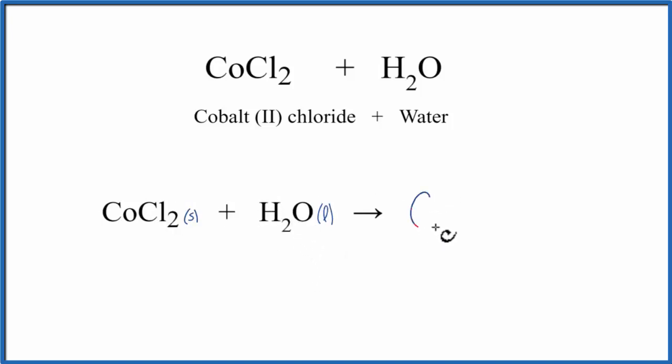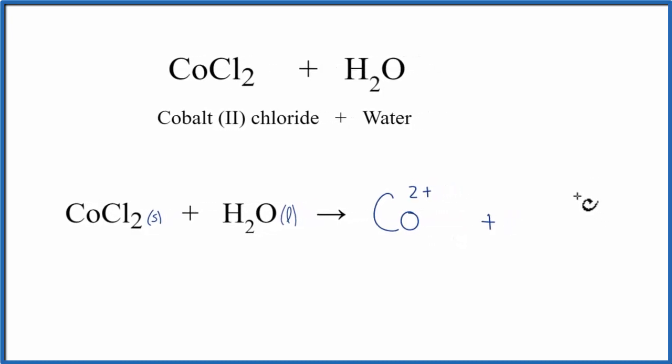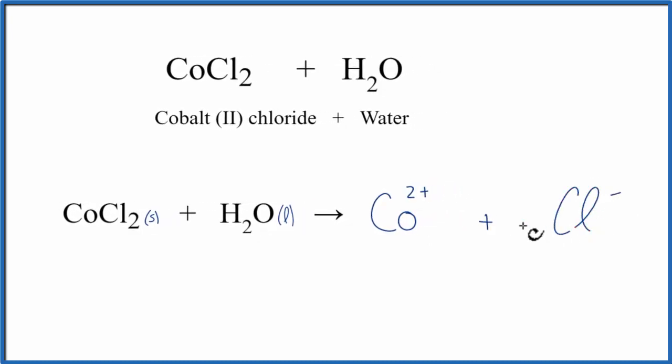So we'll have Co²⁺ plus the Cl⁻ for the chloride ion. But this 2 here, after the chlorine, that means we have 2 of these Cl⁻ ions. So we need to put a coefficient of 2 in front of the chloride ion there to show that.